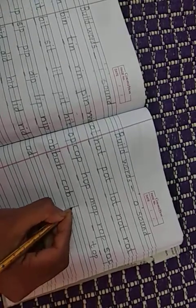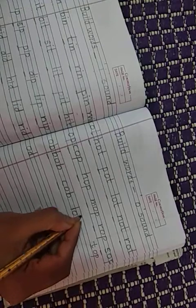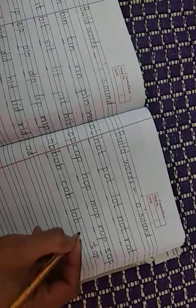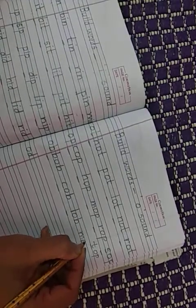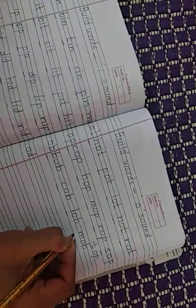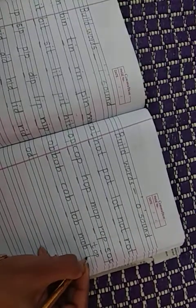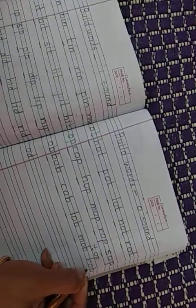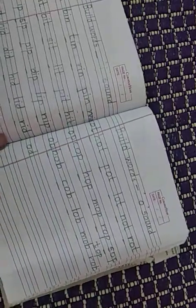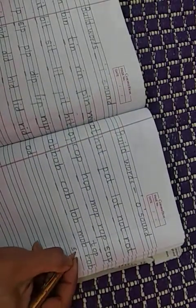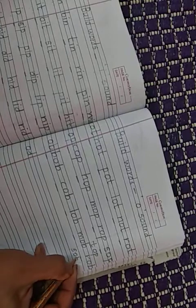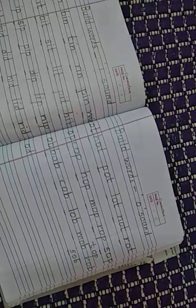Then lobby, that is lob: L, O, B, L, O, B. M, O, B, M, O, B. Then R, O, B, R, O, B, C, O, B. Then children, sob. Yes. S, O, B, sob. See how many words we have formed.